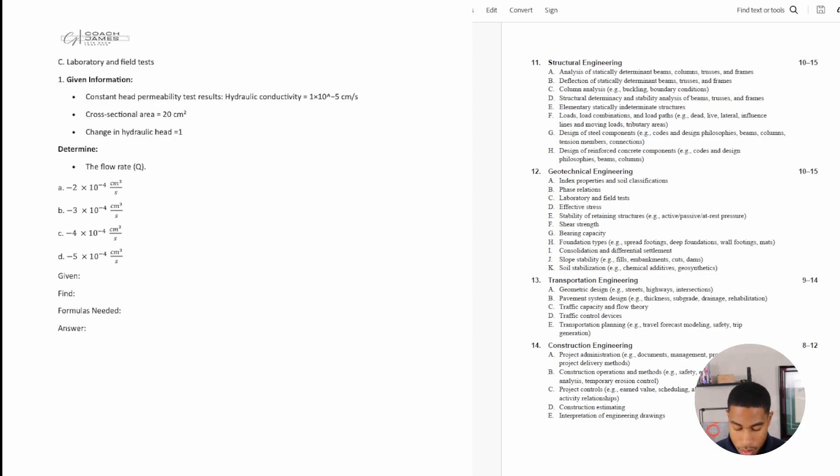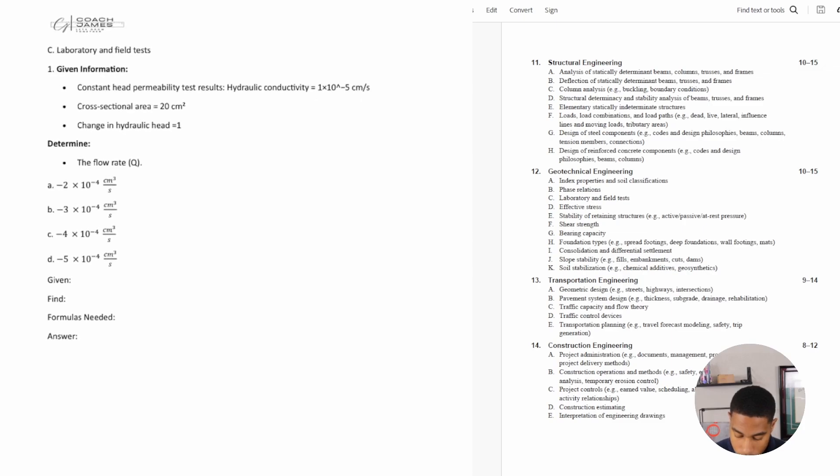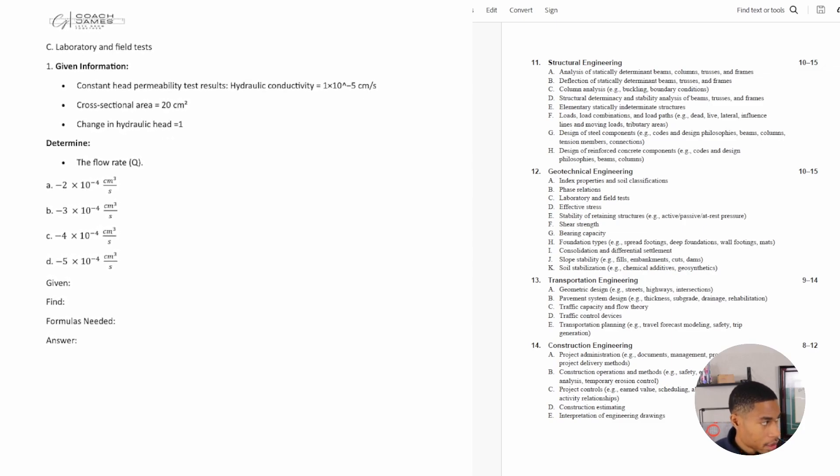All right, number one. Let's zoom in a little bit. Given information: you have a constant head permeability test results. Those test results are hydraulic conductivity K equals 1 times 10 to the negative 5 centimeters per second, cross-sectional area equals 20 centimeters squared, and change in hydraulic head equals 1. Determine the flow rate Q.